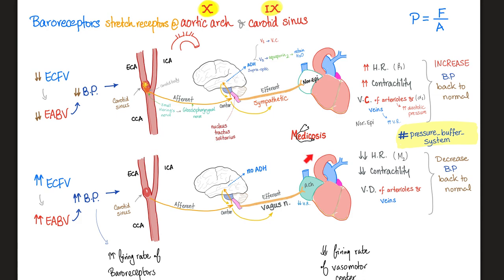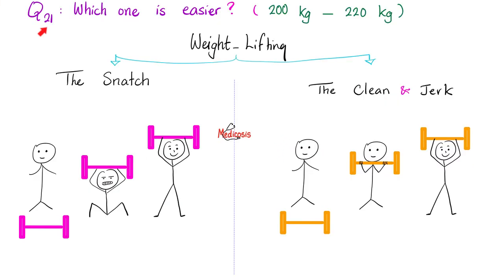Medicine makes so much sense once you understand what you're talking about. Question of the day: which is easier — the snatch weightlifting technique or the clean and jerk? Please search for videos about the difference between these two Olympic weightlifting techniques. If Medicosis can lift 200 kilograms with one and 220 with the other, which technique corresponds to which weight? Let me know the answer in the comments — you'll find the answer in the next video.